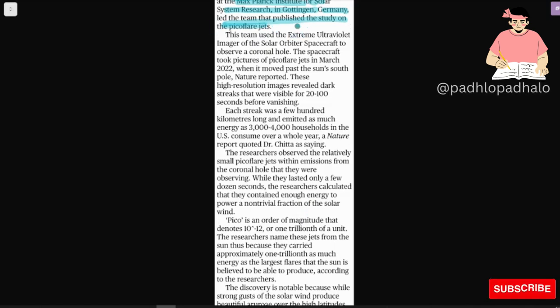This team used the extreme ultraviolet imager of the solar orbiter spacecraft to observe a coronal hole. The spacecraft took a picture of the picoflare jets in March 2022 when it moved past the sun's south pole. Nature reported that these high-resolution images revealed dark streaks that were visible for 20 to 100 seconds before vanishing. Each streak was a few hundred kilometers long and emitted as much energy as 3,000 to 4,000 households in the U.S. consumed over a whole year.